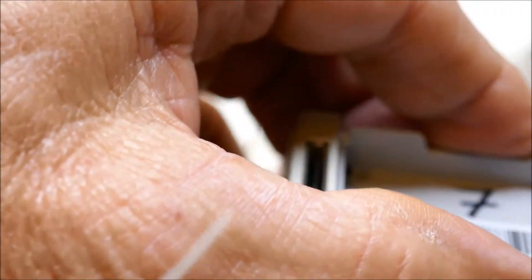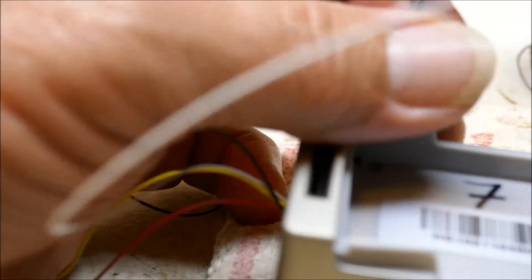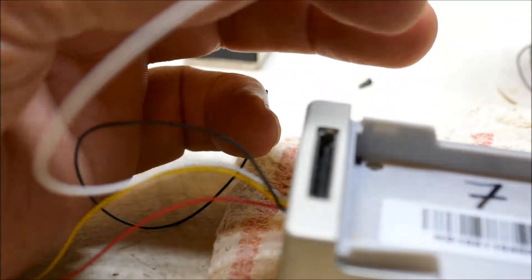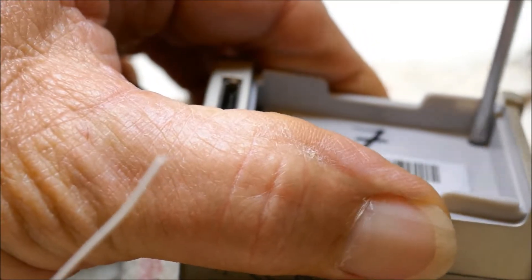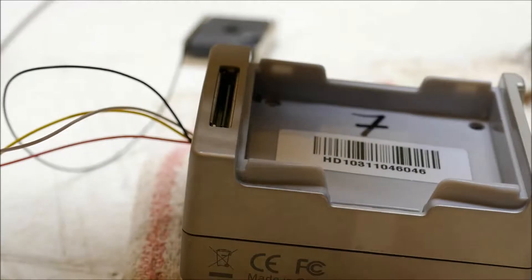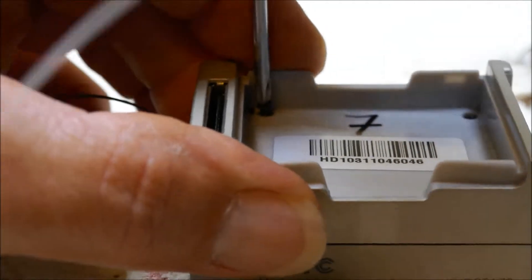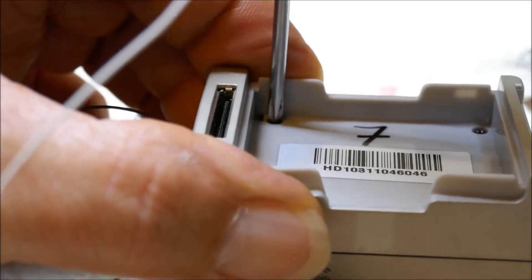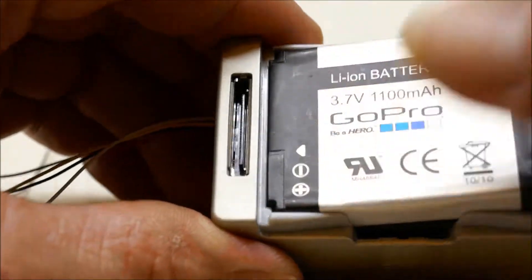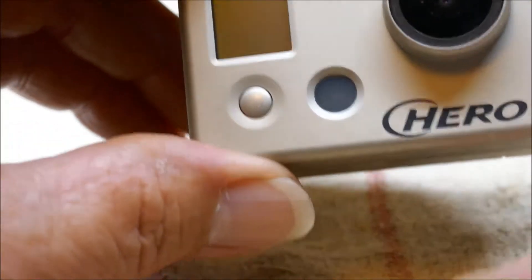Now we can reinstall our screws. Remember, the machine thread screws go on the right, and the coarser thread screws go on the left. So I'm just going to reinstall our battery, put our back cover back on the camera, and our hack is complete.